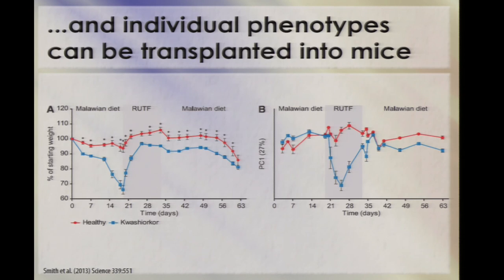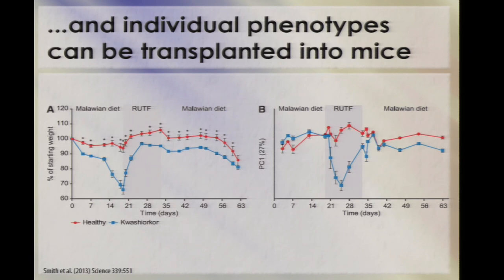The first data from this we published in Science earlier this year, with Michelle Smith in Jeff's lab as first author. Looking at members of a twin pair who are either healthy (the red line) or have kwashiorkor — severe nutritional deficiency — the mice receiving the kwashiorkor community do really badly, losing more than 30% of their body mass. They recover with RUTF, and this is coupled with a very distinct change in the microbiota and also in the functional response. Basically, we can take microbial communities from individuals, put them into mice, and how those mice respond to treatment depends on whose microbial community they received.